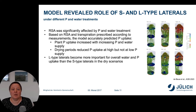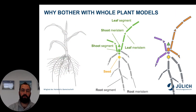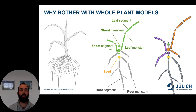For all treatments, the L-type laterals became more important for overall phosphorus uptake than the S-type laterals in the dry scenarios. Moving now from root models to a model which has both the root and the shoot — a whole plant model.